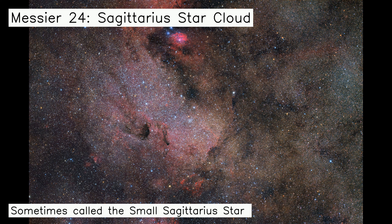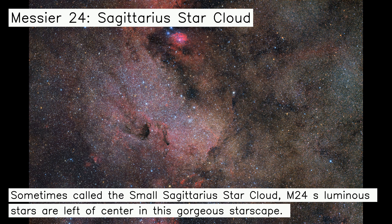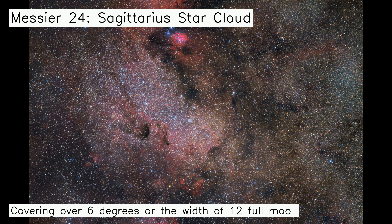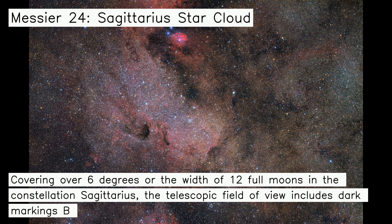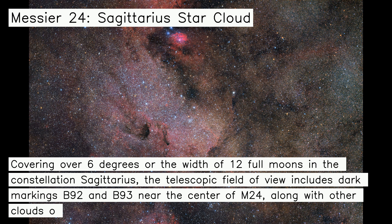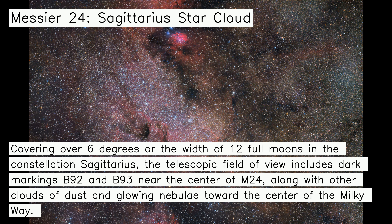Sometimes called the small Sagittarius star cloud, M24's luminous stars are left of center in this gorgeous starscape. Covering over 6 degrees — the width of 12 full moons — in the constellation Sagittarius, the telescopic field of view includes dark markings B92 and B93 near the center of M24, along with other clouds of dust and glowing nebulae toward the center of the Milky Way.